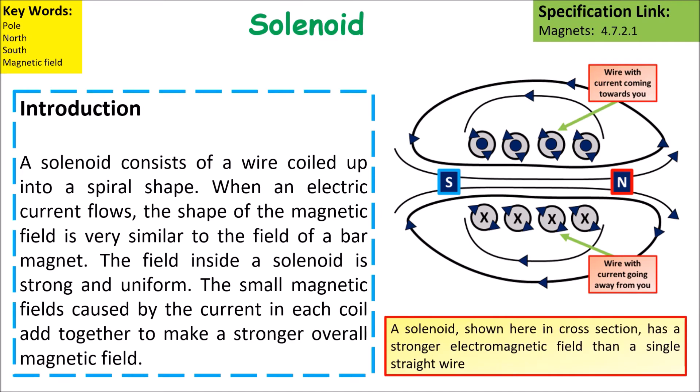A solenoid is shown here in cross-section and has a stronger electromagnetic field than a single straight wire.